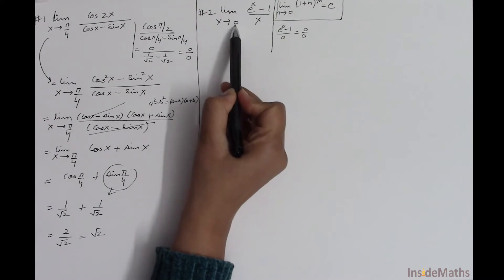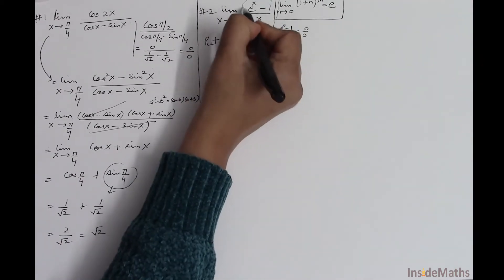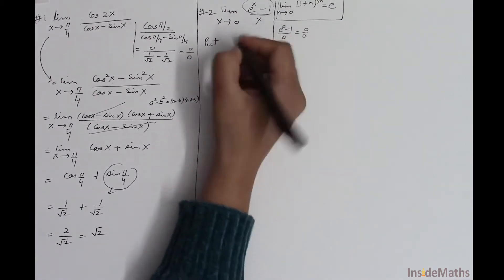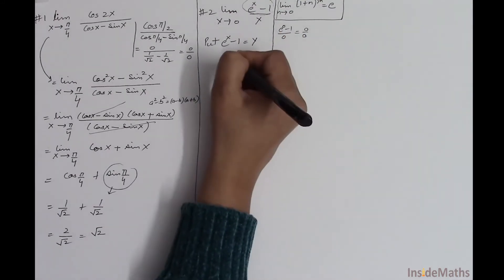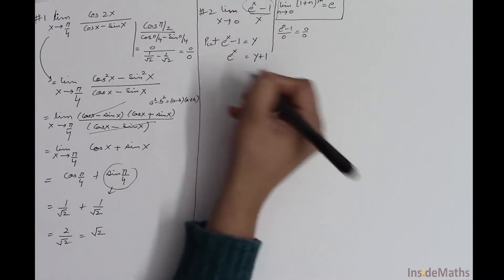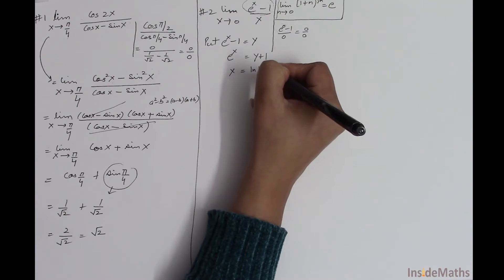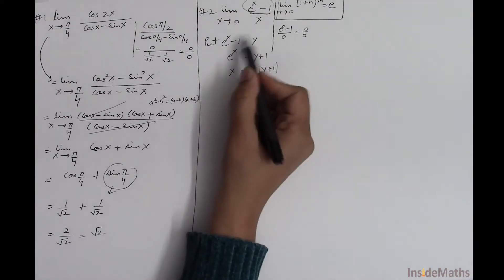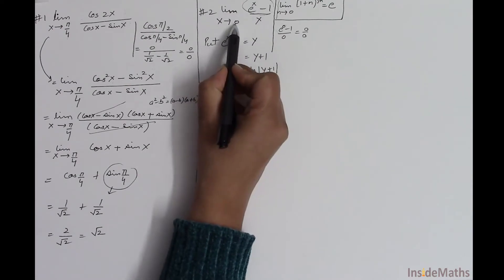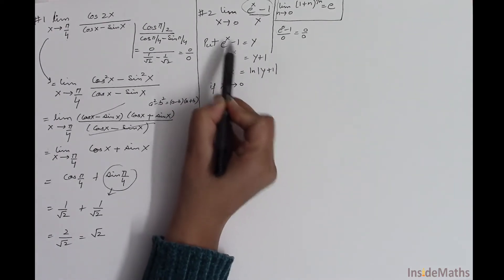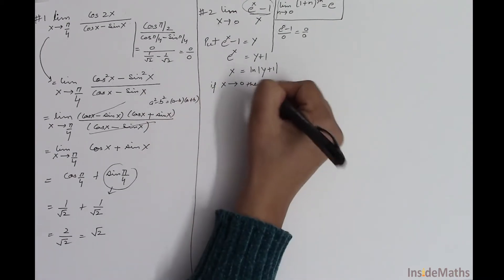The function is not defined at this point. To solve this limit, I'll let y = eˣ - 1, which means eˣ = y + 1 and x = log(y + 1). Now, if x approaches 0, then y also approaches 0, since putting x = 0 gives e⁰ - 1 = 0.